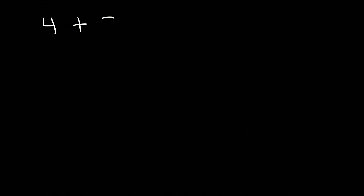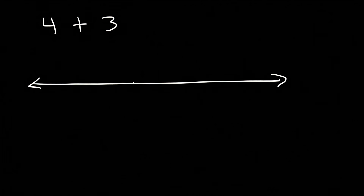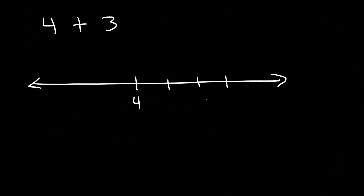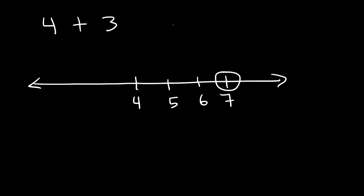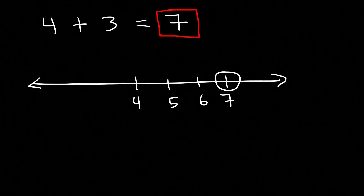Let's work on another example: 4 plus 3. If we start with 4 and travel three spaces to the right — 5, 6, 7 — therefore 4 plus 3 is equal to 7. Using a number line is very helpful whenever you need to add or subtract two integers.